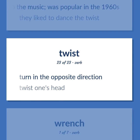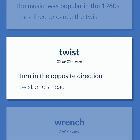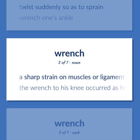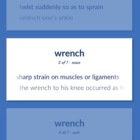Twist: to turn in the opposite direction — 'twist one's head.' Wrench: to twist suddenly so as to sprain — 'wrench one's ankle.' Also, a sharp strain on muscles or ligaments — 'The wrench to his knee occurred as he fell.'